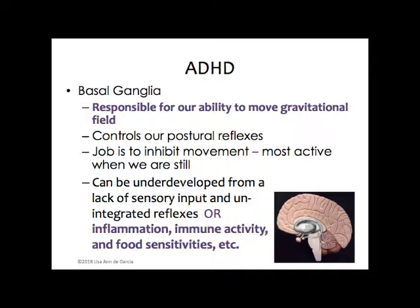In an elderly person, when the basal ganglia cells start to die, the postural reflexes start to go away, the primitive reflexes come back out, and they can start to have Parkinson's. When we move forward, our postural reflexes guide us to walk, but an elderly person leaning forward might fall down. As the cells of the basal ganglia die, it kind of reverses itself. In Parkinson's, the basal ganglia is no longer able to inhibit those unwanted movements — hence the tremors.